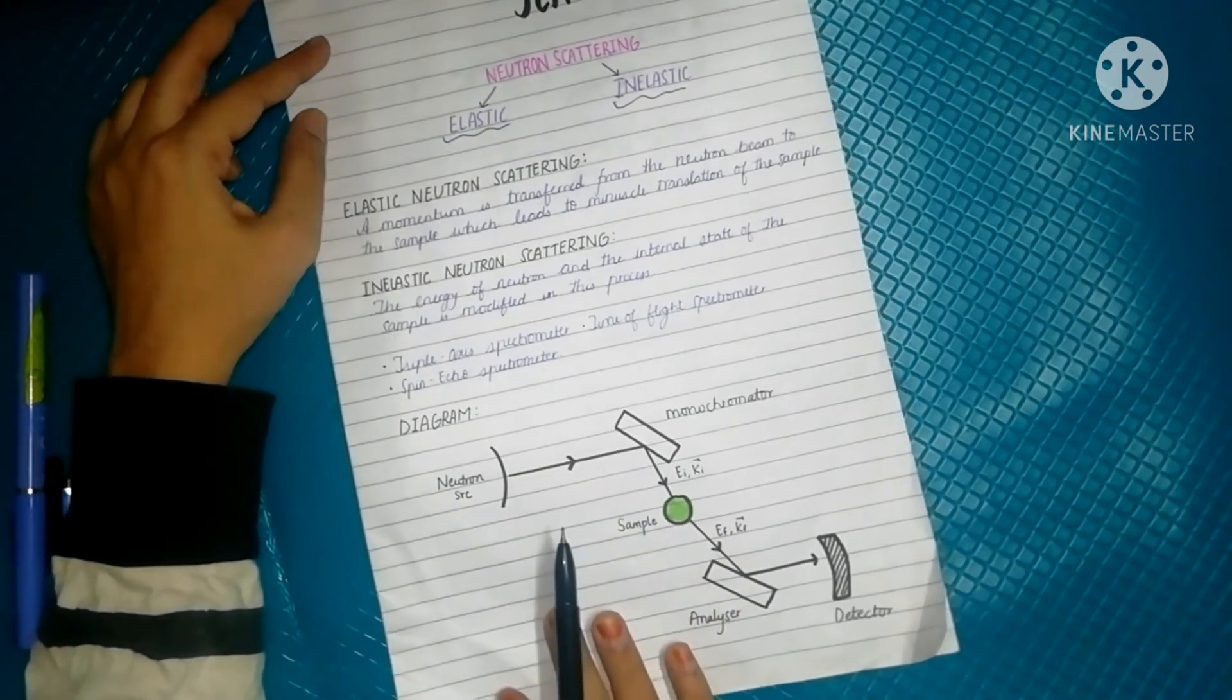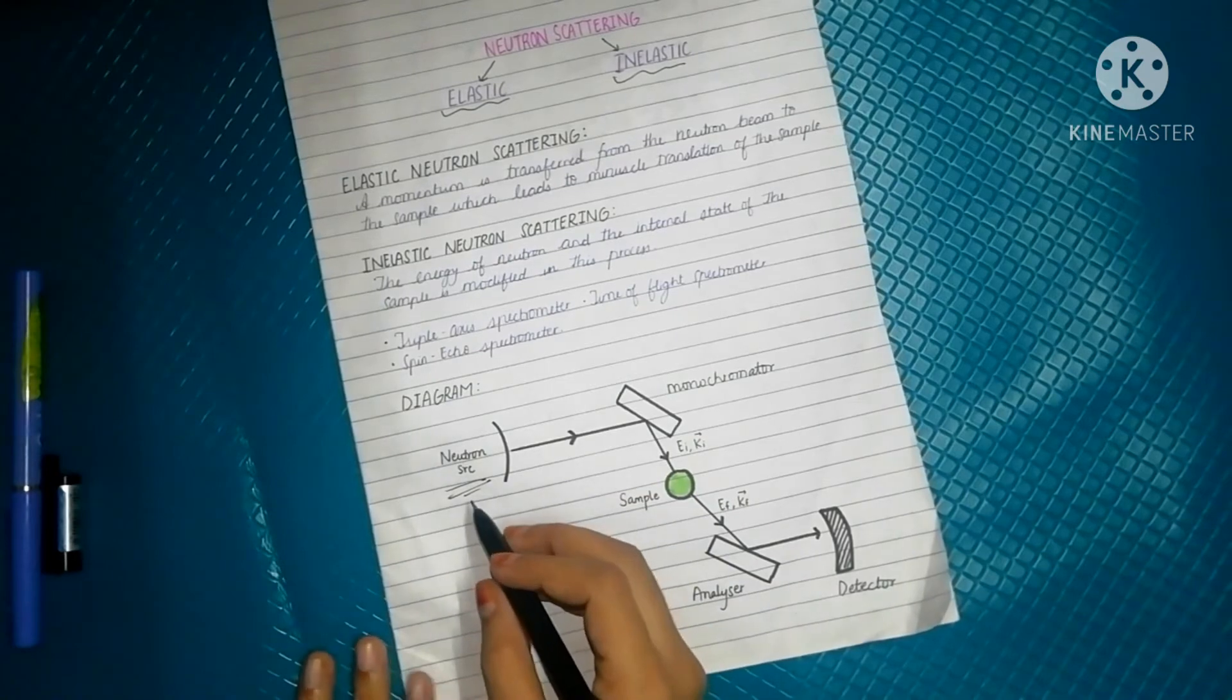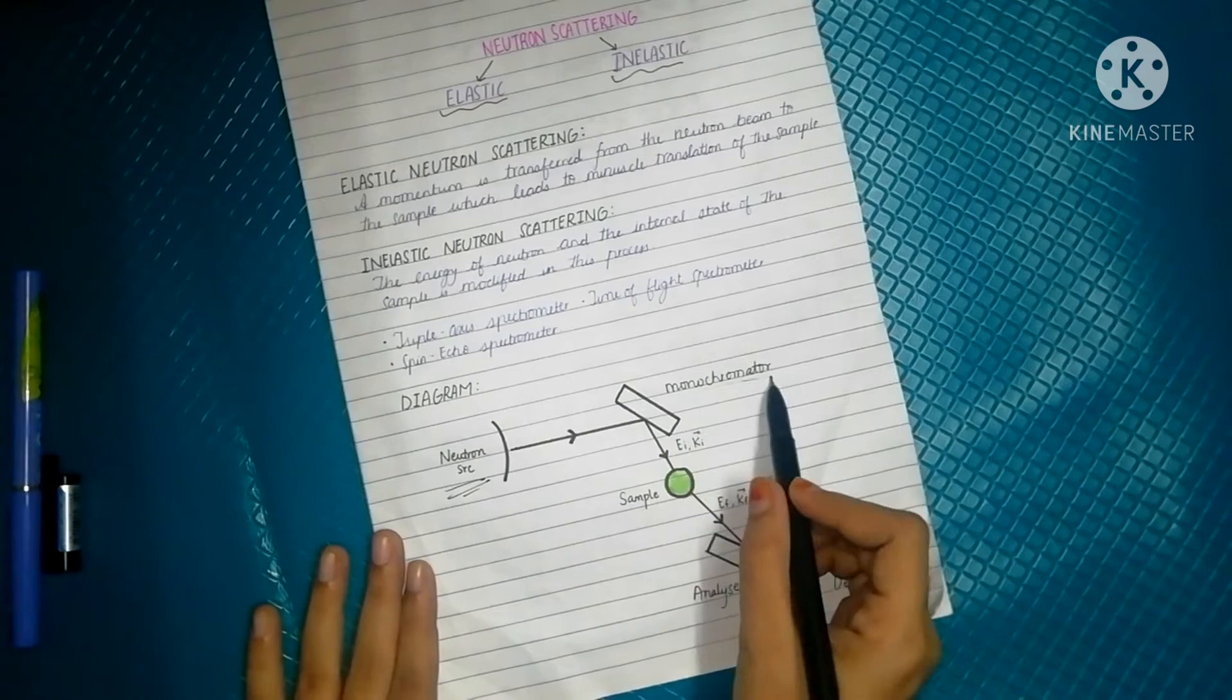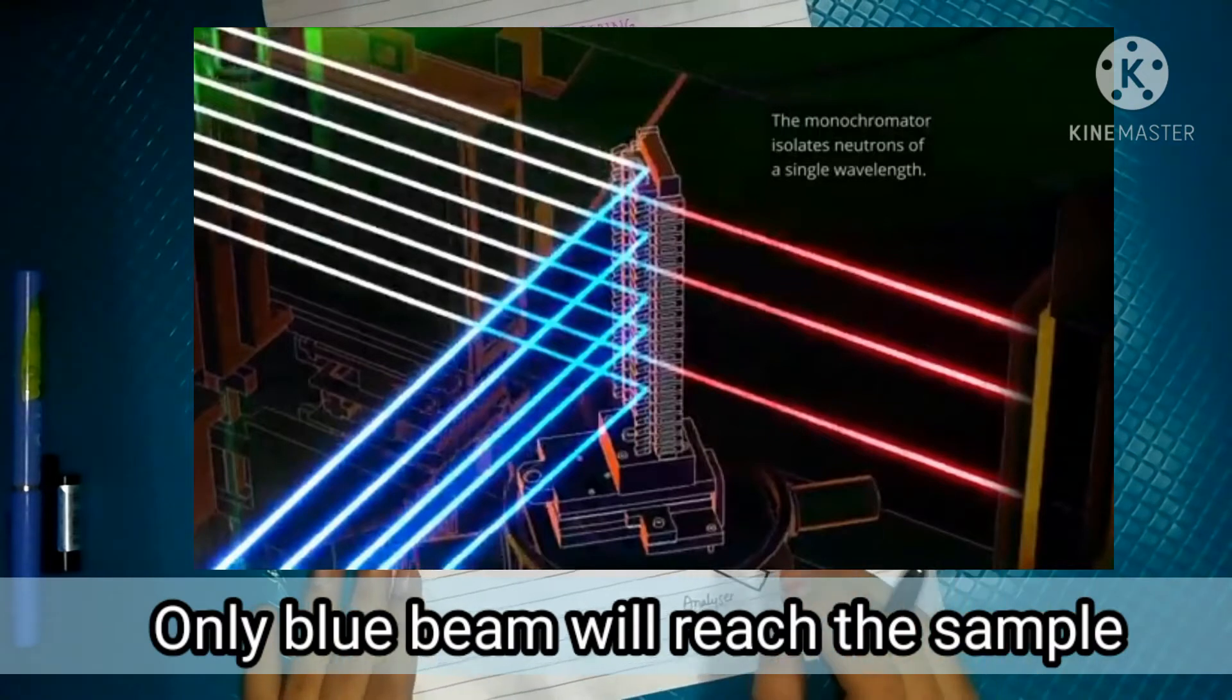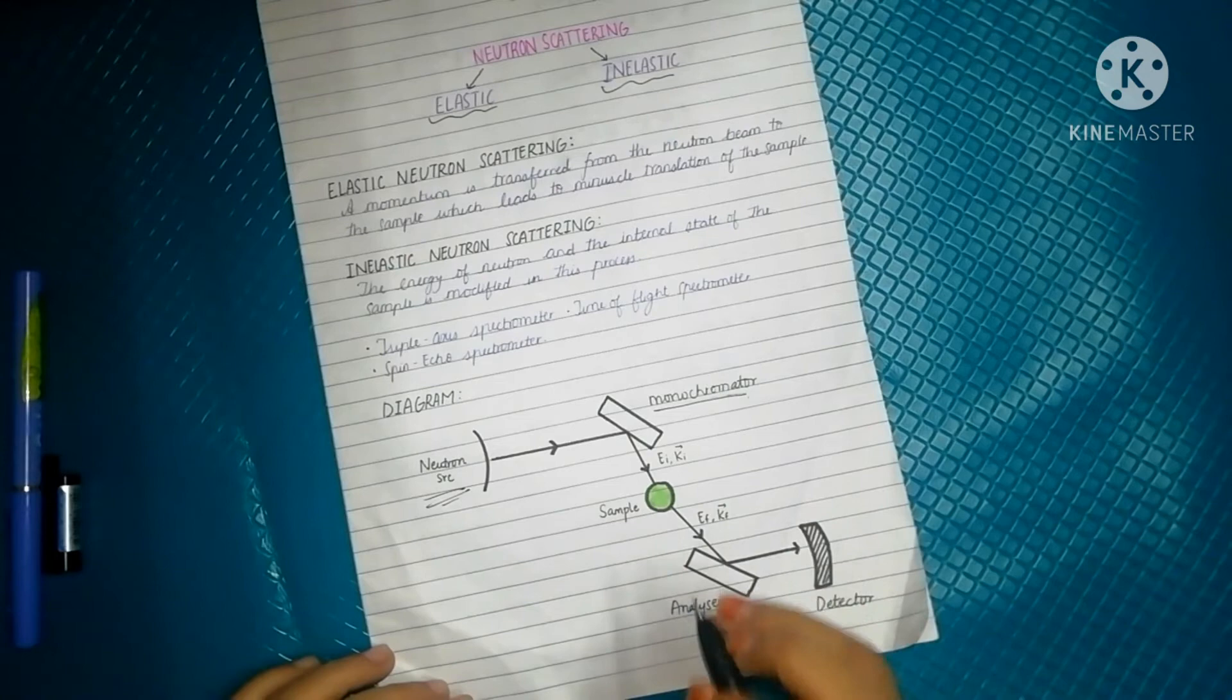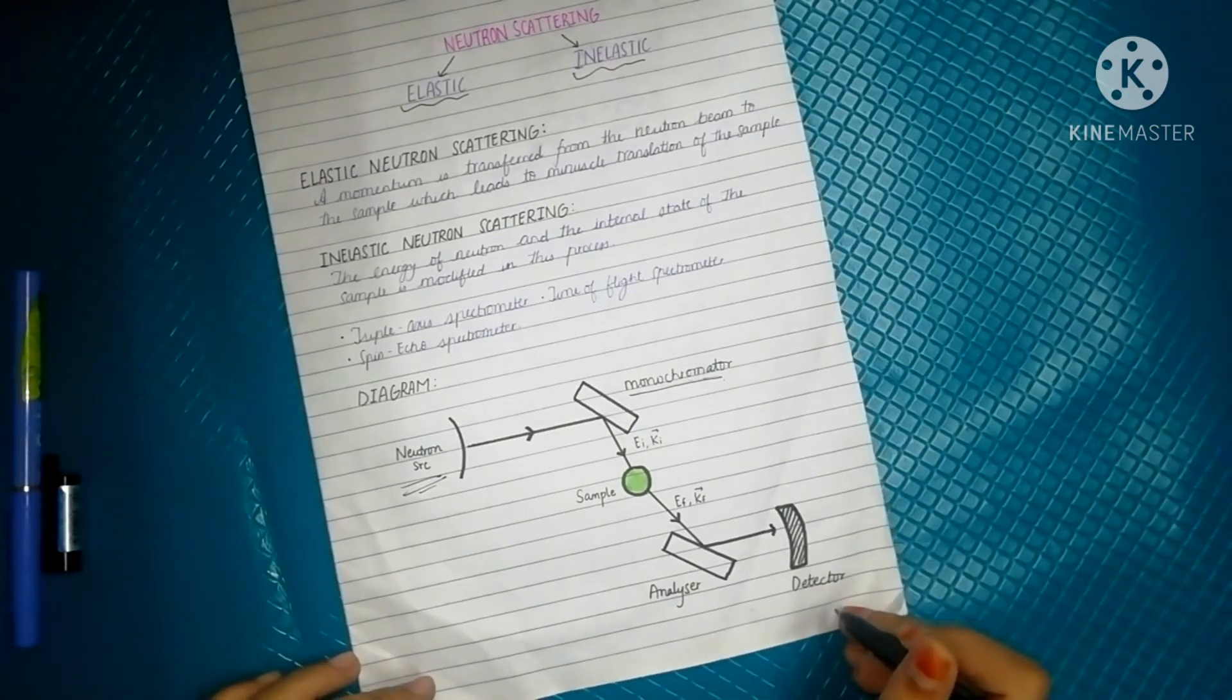Now let's see the diagrammatic representation of inelastic neutron scattering. This is our neutron source. The neutron source is going to emit a high energy polychromatic neutron beam. This beam is going to travel straight to the monochromator. The monochromator is going to send a single high energy beam to the sample. The beam goes to the sample, hits it, and the beam further travels to the analyzer. After striking the analyzer, the beam is sent to the detector and measurements are done at the detector.